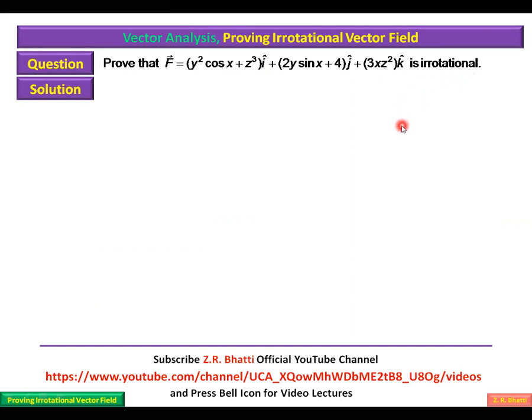As explained in the previous lecture, 'irrotational' means that if the curl of a vector field is zero, we call it an irrotational vector field. That is, if del × F = 0, then the field is irrotational.